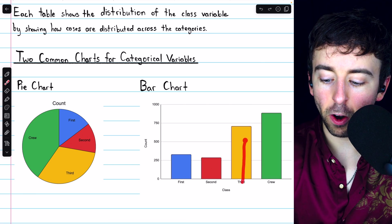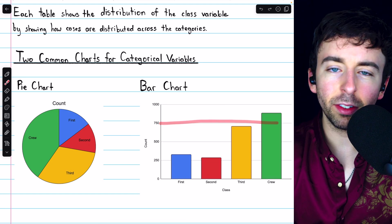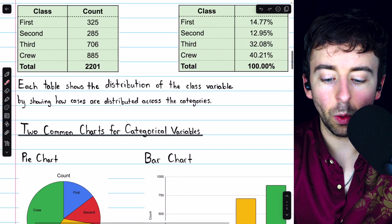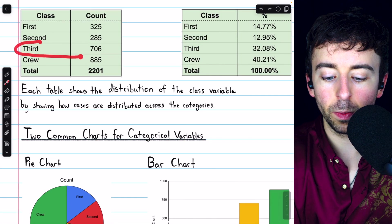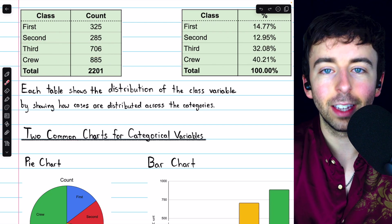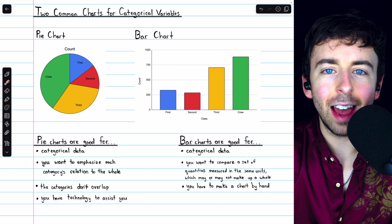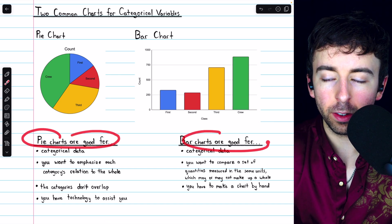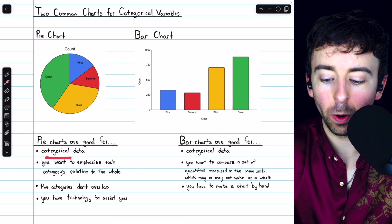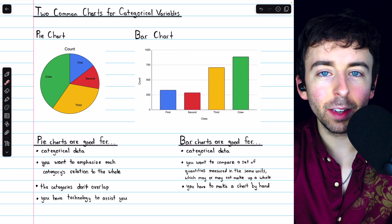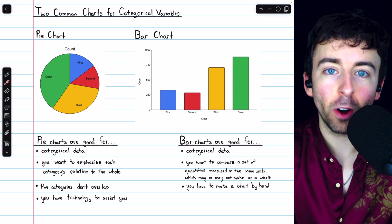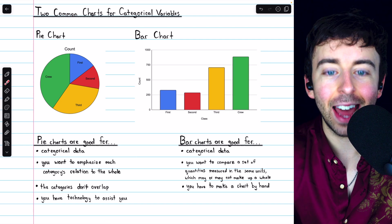We can see from the bar chart that the number of people in third class looks to be just under 750, and if we go up to our table, we see that's true. Third class has 706 people in it. Both of these charts can be very useful, but they definitely have their differences. Pie charts and bar charts are good only for categorical data. When we deal with quantitative data, we're going to need different charts.